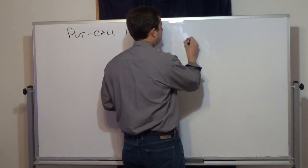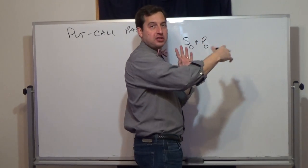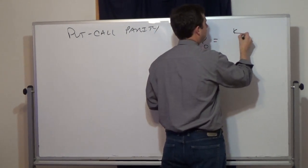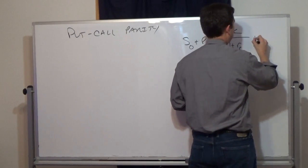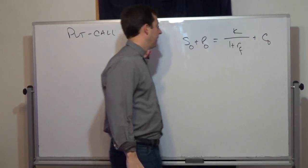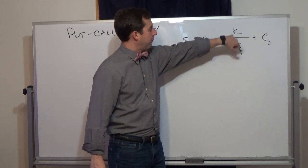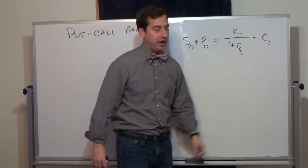Put-call parity says the stock price today plus the put price today, all the options with the same strike price, equals that strike price, the present value of that strike price at the risk-free rate, plus the call price today. Stock price today plus put price today equals the present value of the strike price plus the call price, put and call with the same strike.